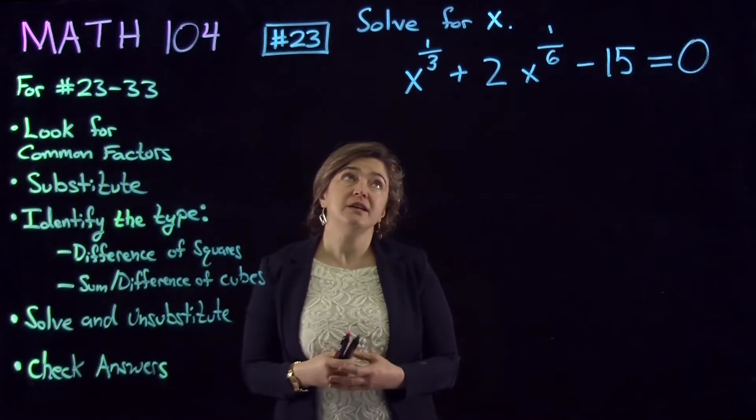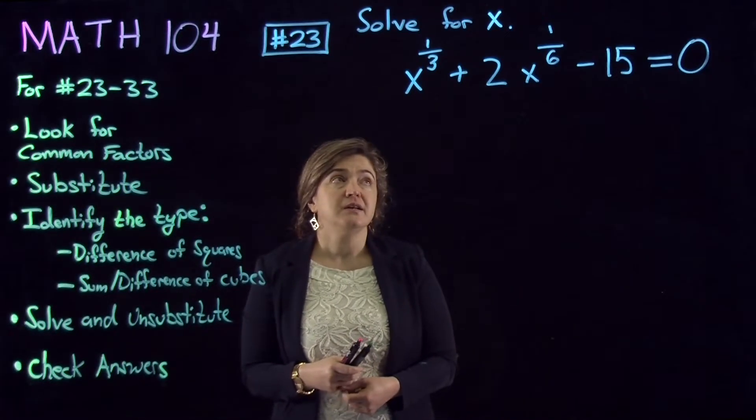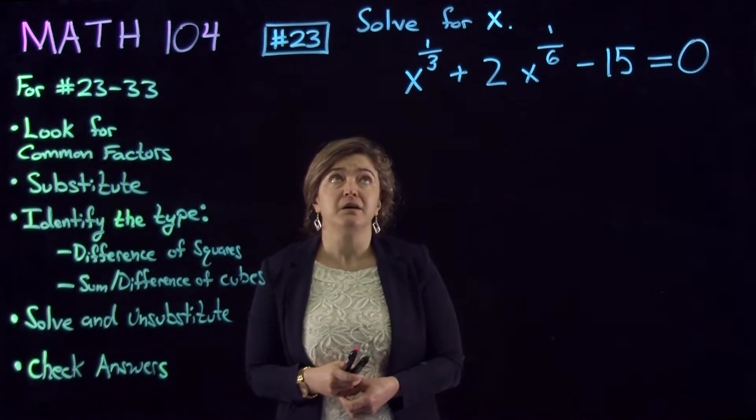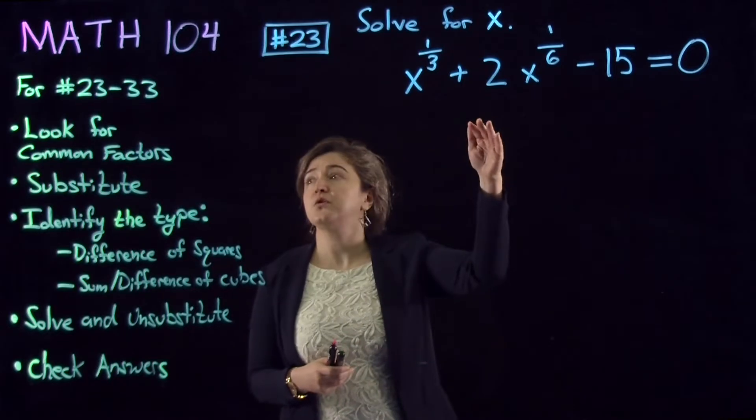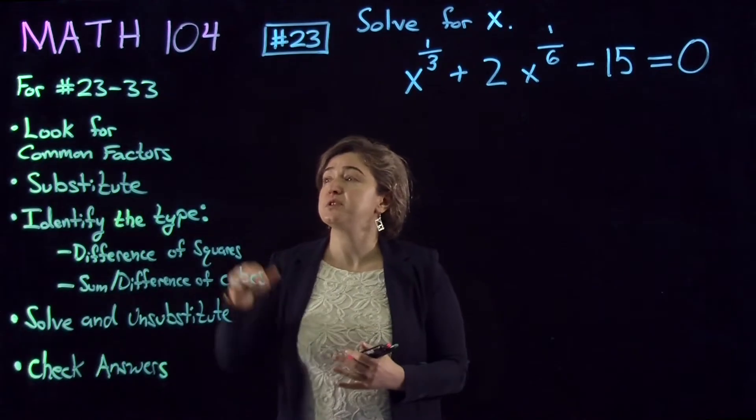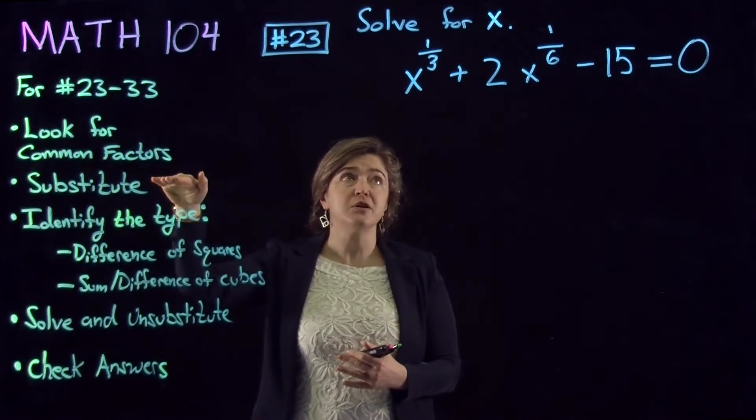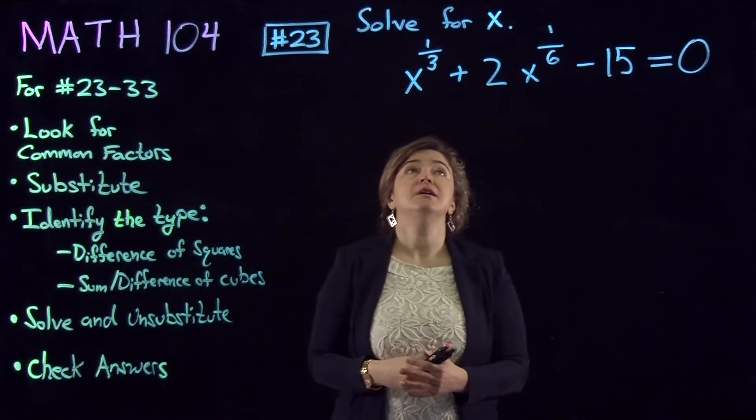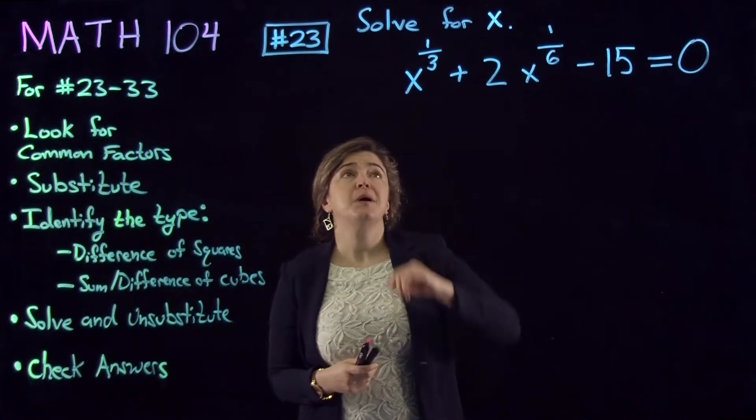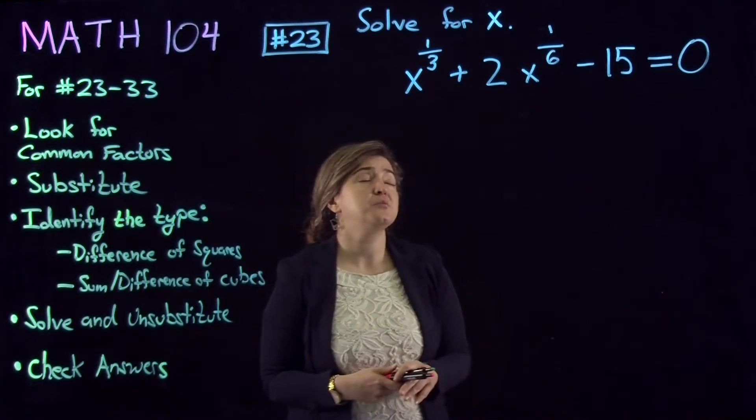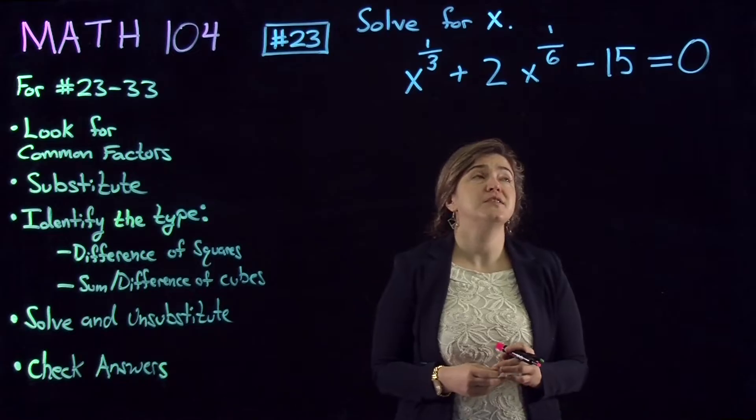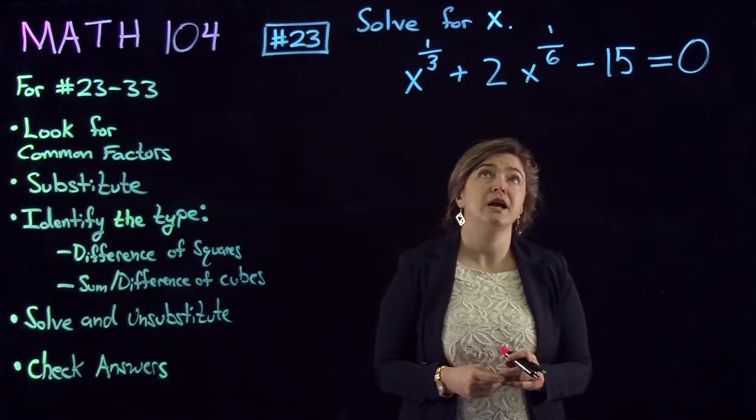These are solving for x in equations that will require us to do substitution. So, let's start with the first one. We're solving x to the power of one-third plus 2x to the power of one-sixth minus 15 equal to 0 for x.